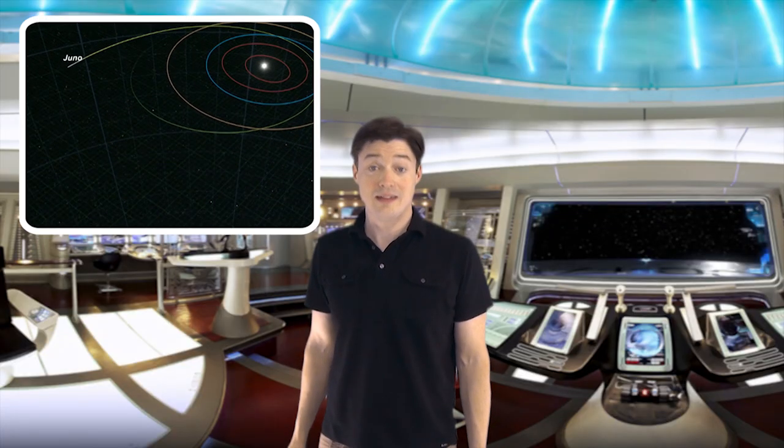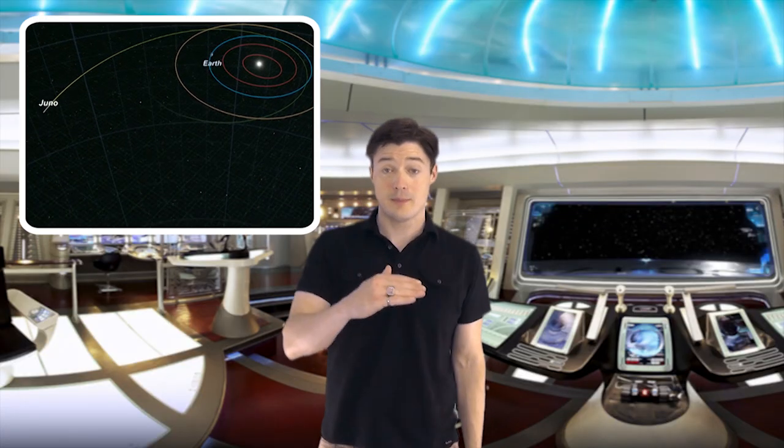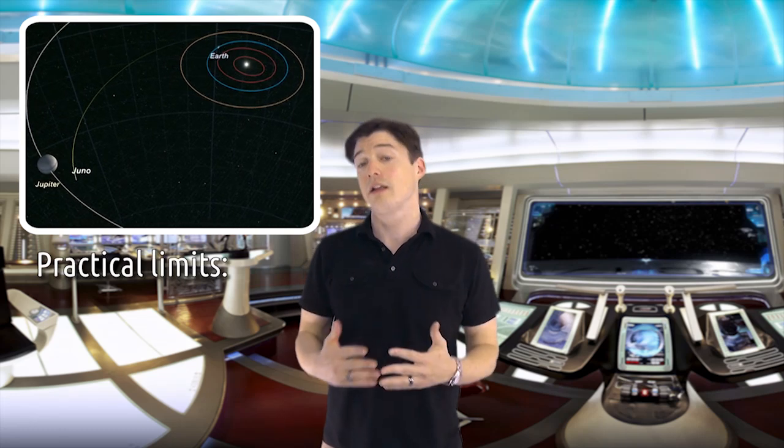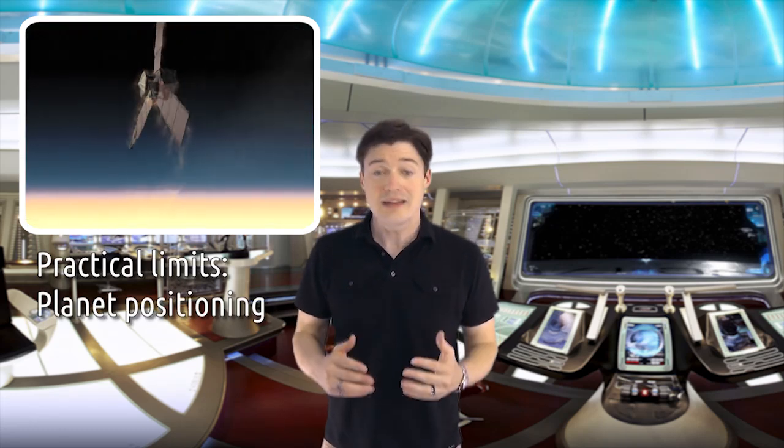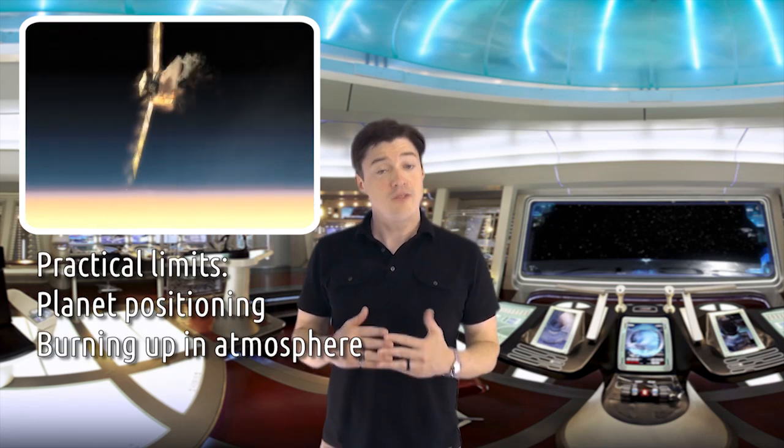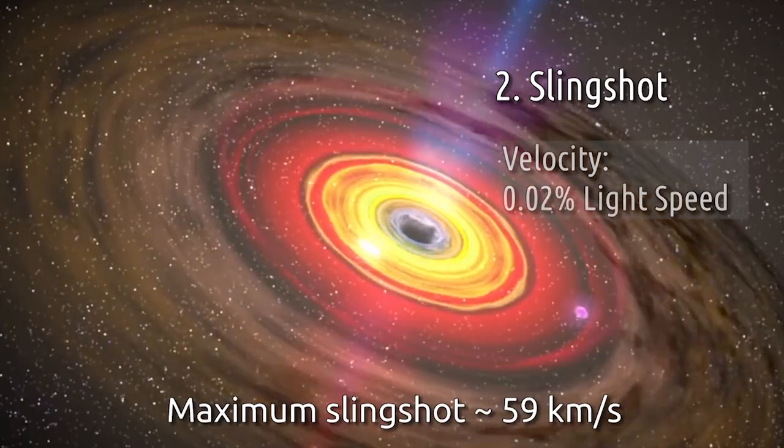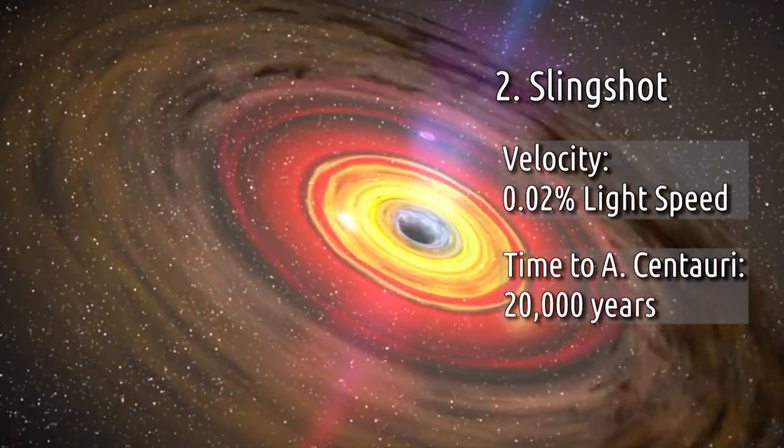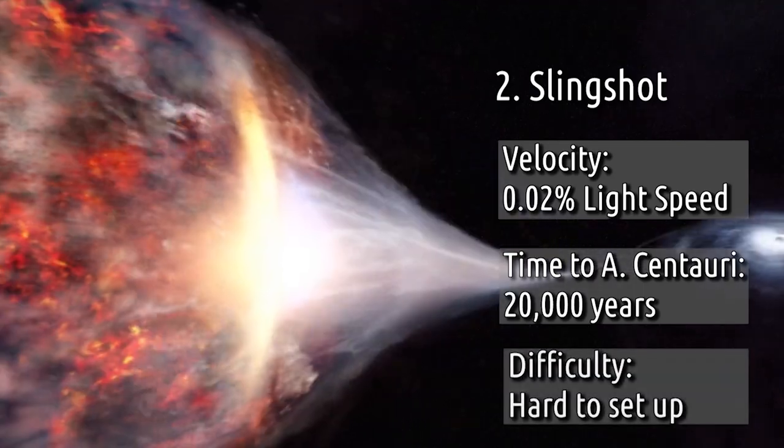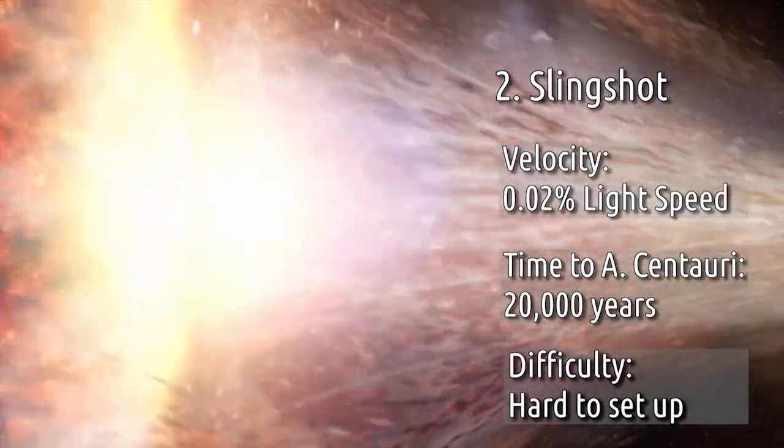Gravity slingshots allow us to steal energy from planets as we swing by. In theory, many gravity slingshots could approach relativistic speeds, but practically in our solar system the fastest we could get is about the escape velocity from Jupiter. A slingshot around a black hole could work, but having a conveniently placed black hole that close creates problems of its own.